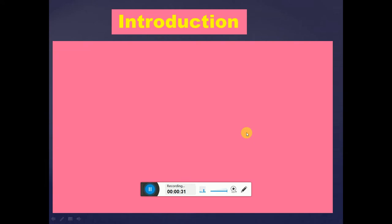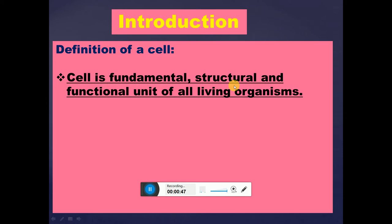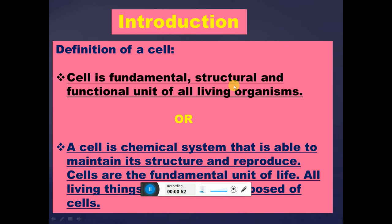This is part one of the cell lecture series. As we all know, all living organisms are made up of cells. The cell is the fundamental structural and functional unit of all living organisms. More precisely, a cell is a chemical system that is able to maintain its structure and reproduce. Cells are the fundamental unit of life.